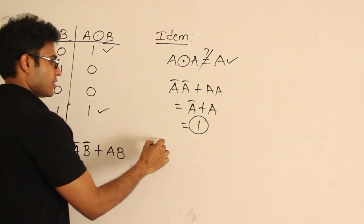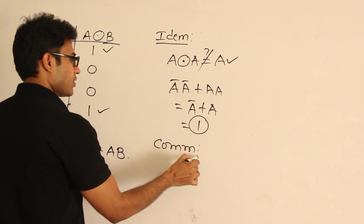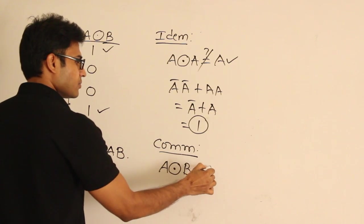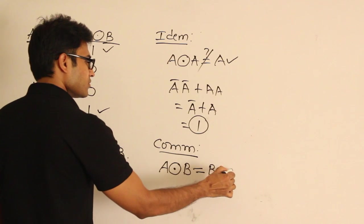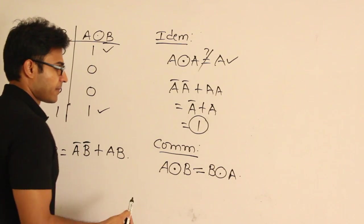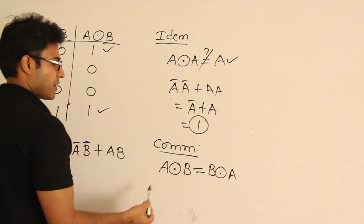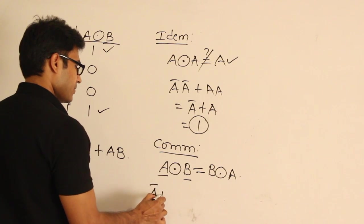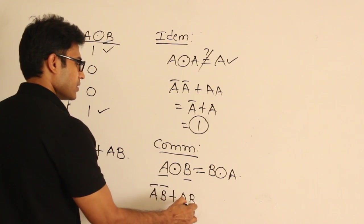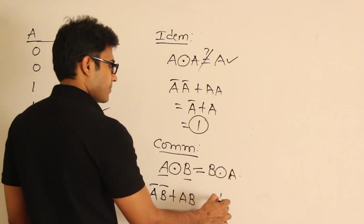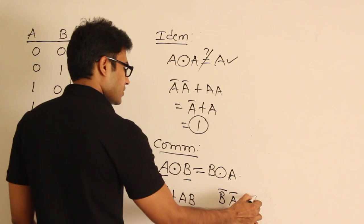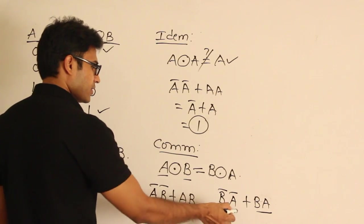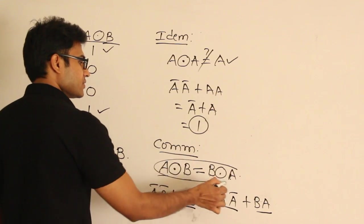Next, let's check whether Exclusive NOR is commutative. Commutative means A XNOR B should equal B XNOR A. Expanding A XNOR B gives A'B' + AB. Expanding B XNOR A gives B'A' + BA. These terms are identical, so both expressions are equal. Therefore, Exclusive NOR is commutative.